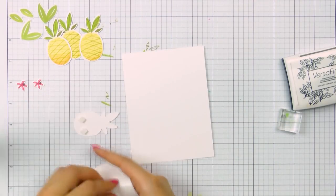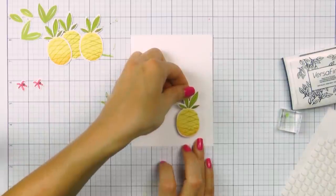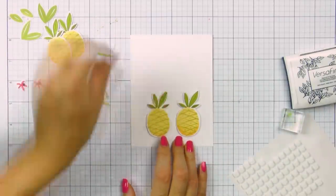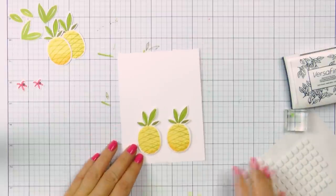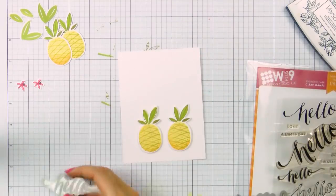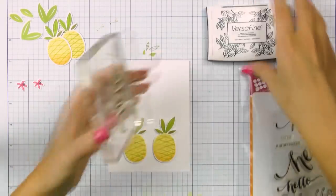Now I'm going to use foam adhesive and I'm going to foam mount some of my pineapples in place. So I've already adhered the two bottom pineapples and before I go ahead and foam mount the other two pineapples onto my card, I want to stamp the main sentiment. So I'm going with a simple hello.